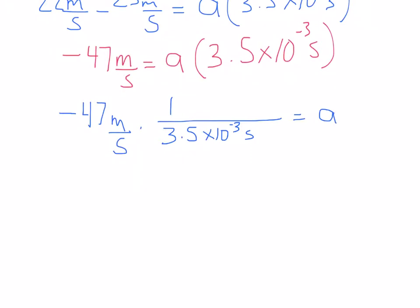Notice that we have meters, seconds, and seconds, so the units are going to be equal to meters over seconds squared. This is good. That's what we want because that's what acceleration is. Once we do all this calculation here, we end up getting 13,428.57 meters per second squared.